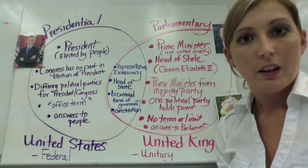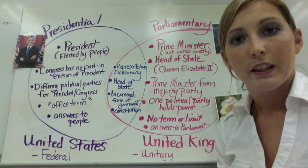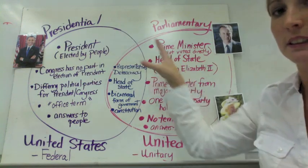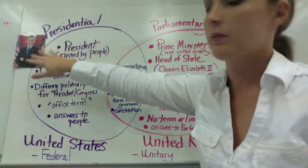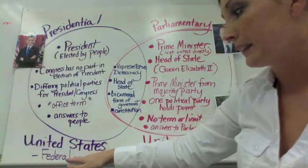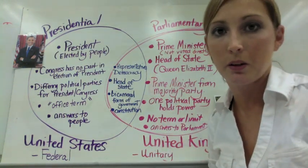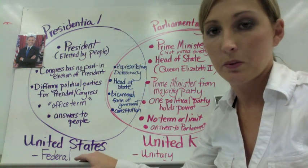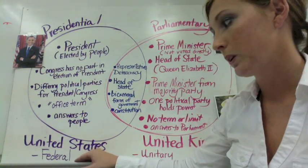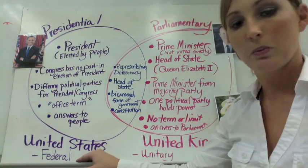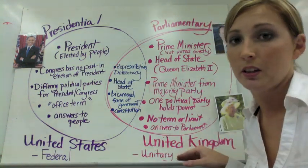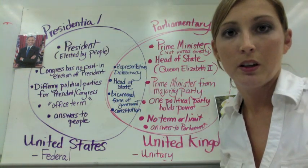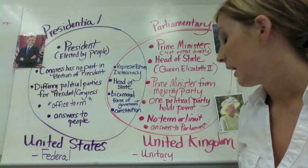In class you were given a Venn diagram — go ahead and get that out and begin filling in the presidential and parliamentary differences. We're going to apply this to the United States and the United Kingdom and extend the example further. The United States is a federal democracy, where power is shared — that should be a review. The United Kingdom is a unitary system, where the central government holds most of the power.